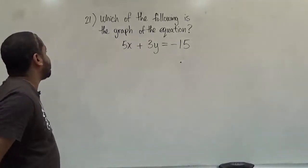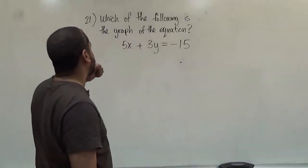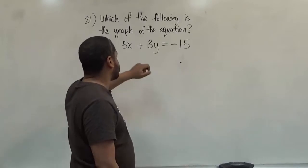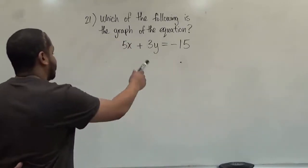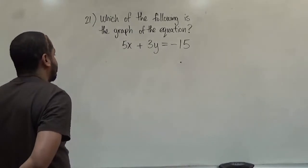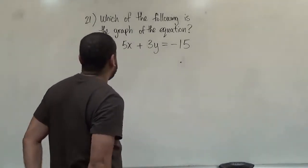So here what we're asking is which of the following is the graph of the equation 5x plus 3y equals negative 15. Now here I'm going to show the selection options for the answers of this problem because I'm going to build it from the ground up.